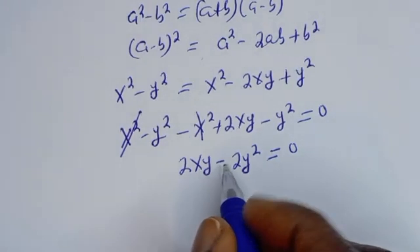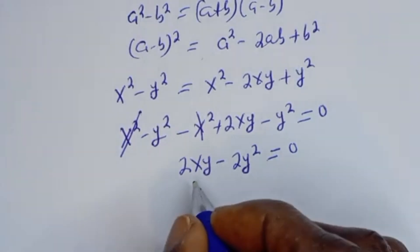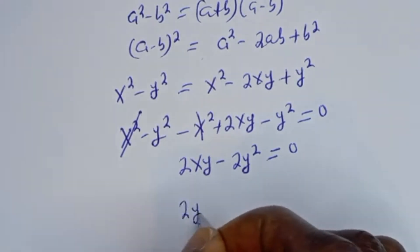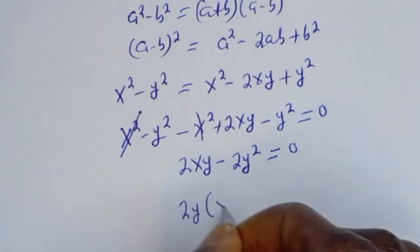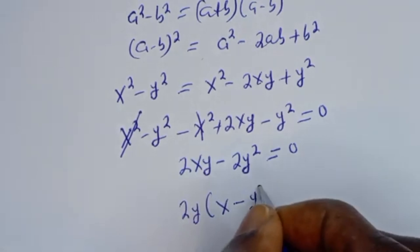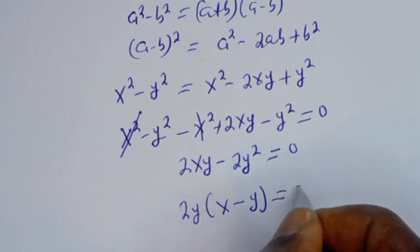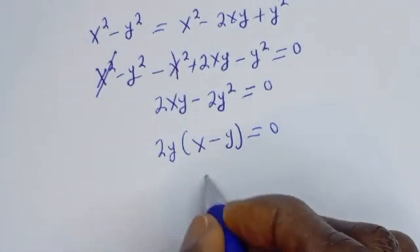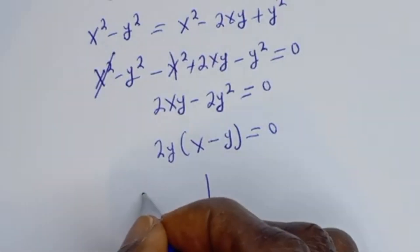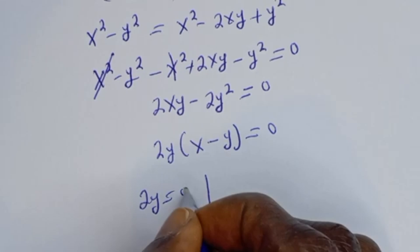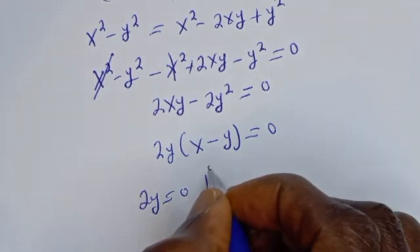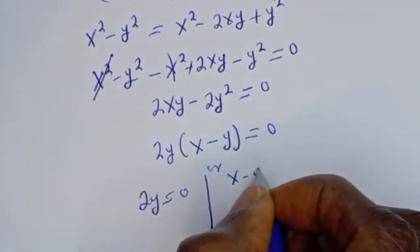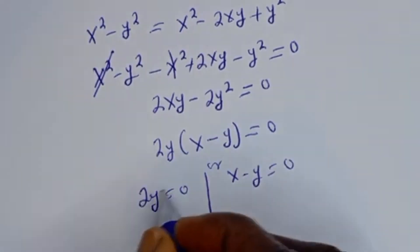From here, 2Y is common — let's bring it out. We have 2Y bracket X minus Y is equal to 0. There are two cases: 2Y is equal to 0, or X minus Y is equal to 0.